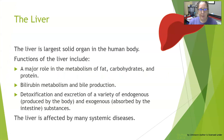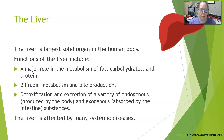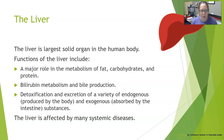The liver is the largest solid organ in the human body. It is located in the right upper quadrant of the abdomen. The functions of the liver include a major role in the metabolism of fat, carbohydrates, and protein. It is also involved in bilirubin metabolism and bile production.